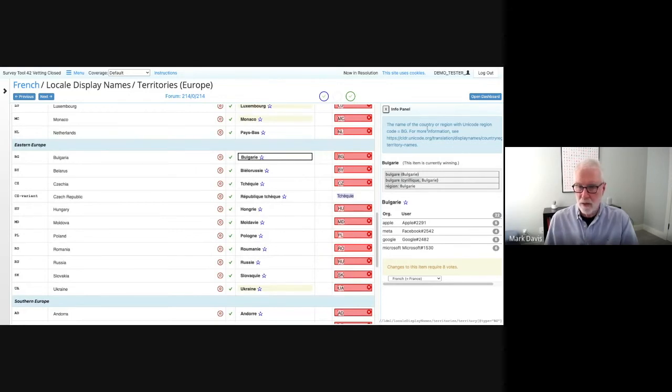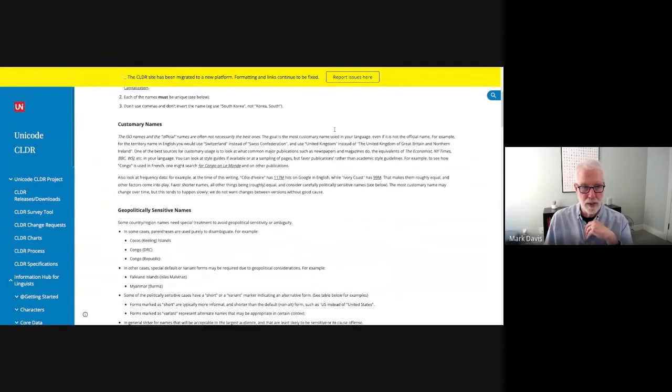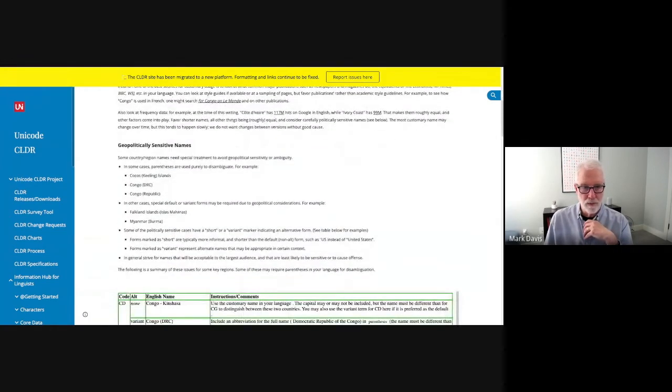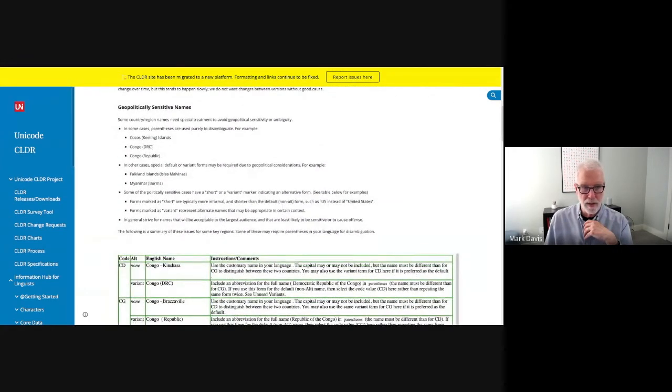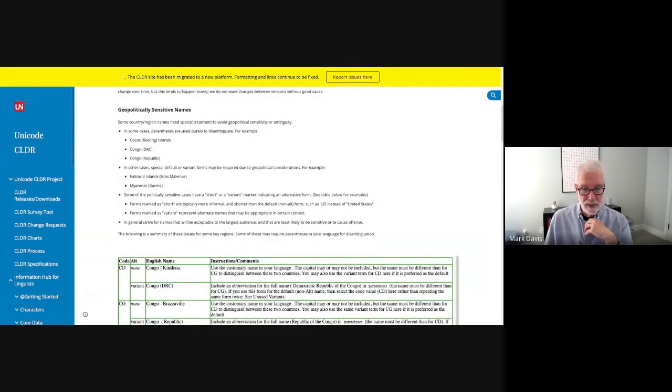Right in here, you see the name of the country with the region, this is a little panel that tells you a little bit more about it. And it links to a page that tells you much more about it. So here, for example, this talks about the different regions, geopolitically sensitive names, or names that are very easily confused.